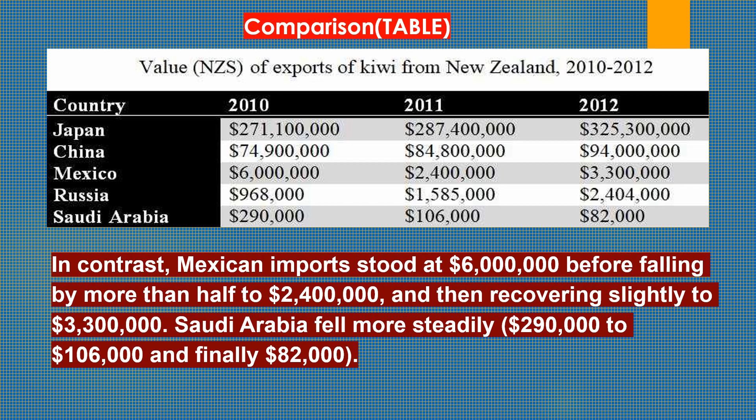In contrast, Mexican imports peaked at 600,000 dollars before falling by more than half to 240,000 and then recovering slightly to 330,000. Saudi Arabia fell more steadily from 290,000 to 1,066,000 and finally to 82,000 dollars.